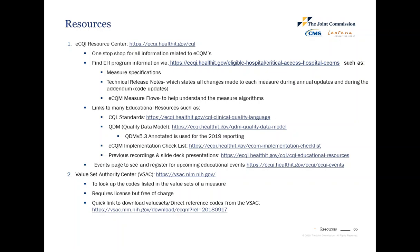The eCQI Resource Center is a one-stop shop for eCQM-related information. It houses various tools and resources such as the measure specifications, the technical release notes which describe all changes made during the annual updates process and the addendum, measure flows to help understand how the data is processed, links to the QDM and CQL standards, as well as previously recorded webinars and slide presentations. There is also an event calendar where you can find additional educational sessions. The Value Set Authority Center is where all value sets and direct reference codes used in the measures are stored — it requires a license but it's free to the public.